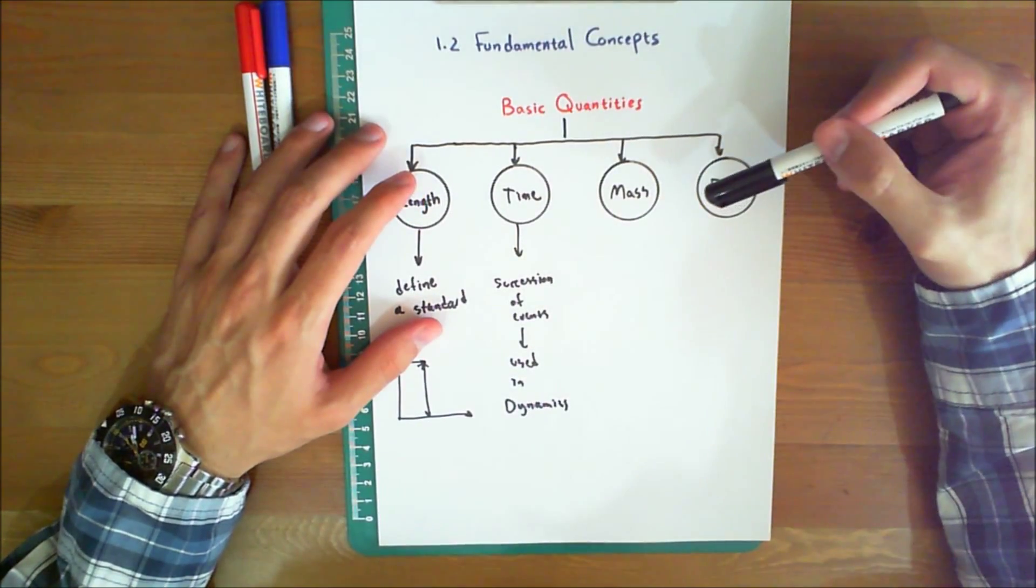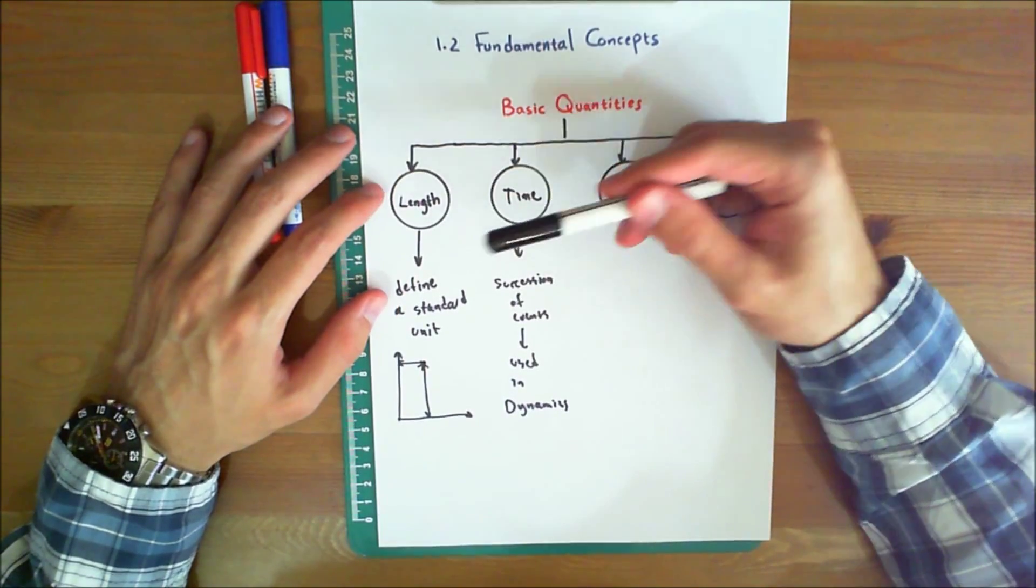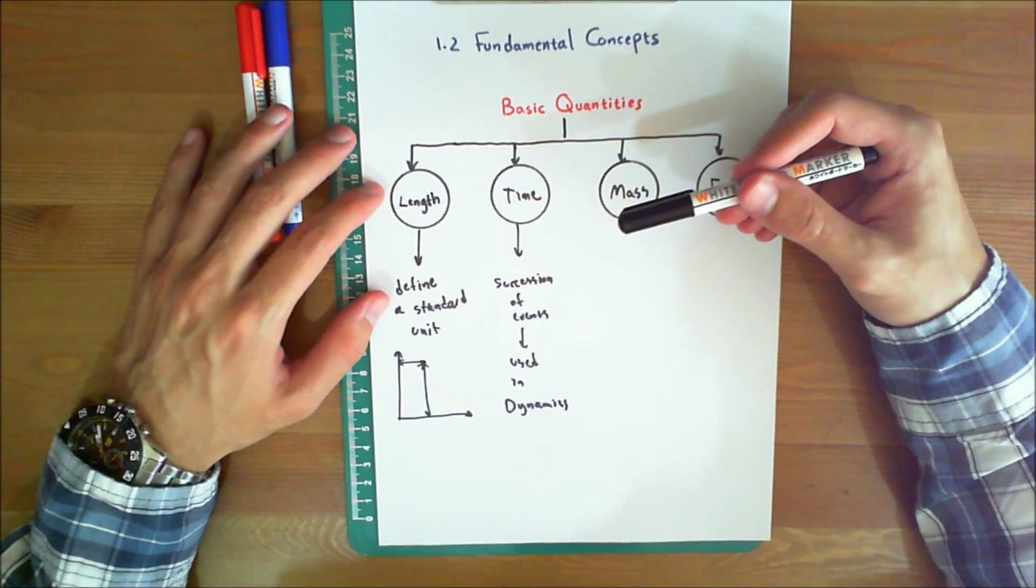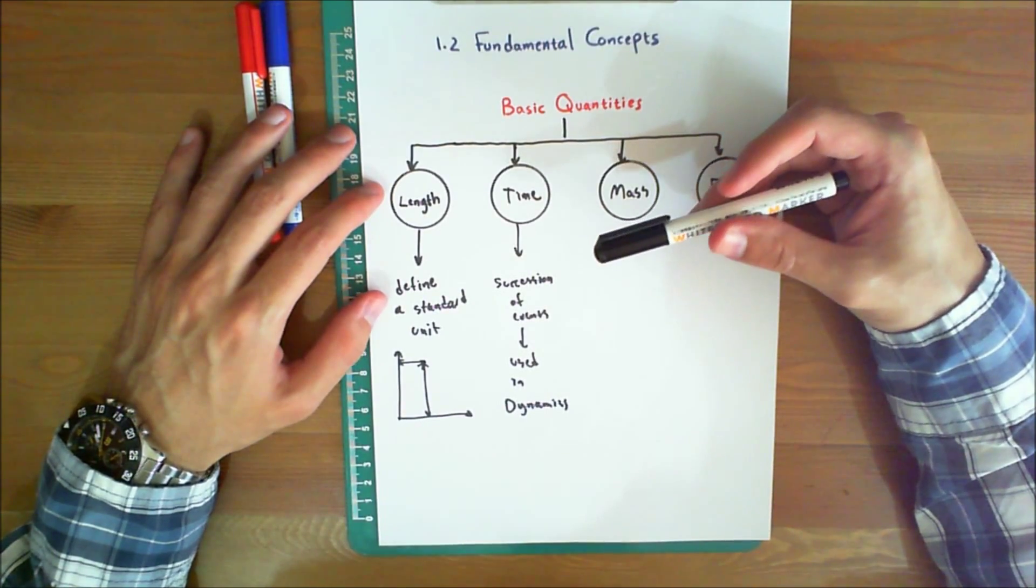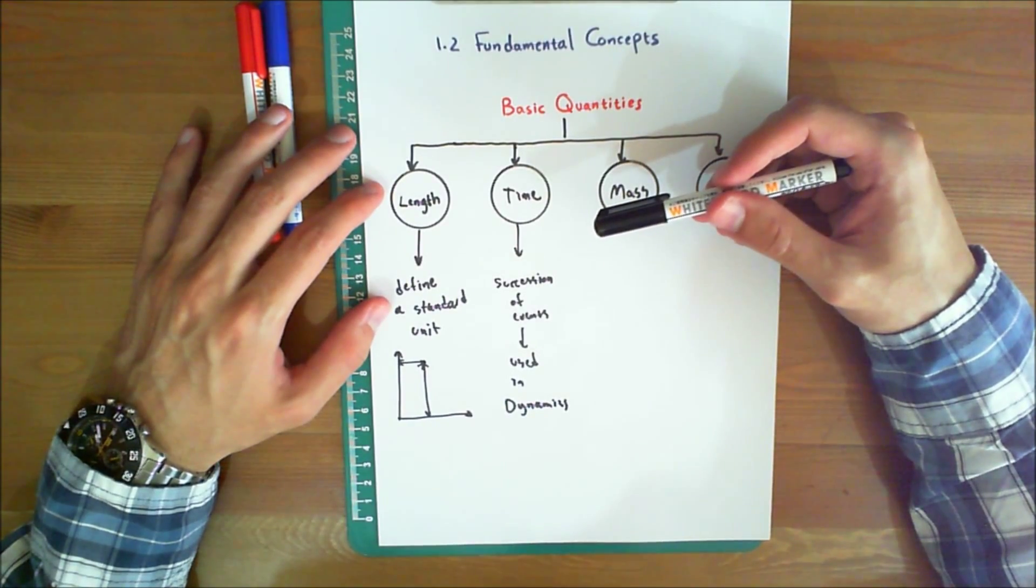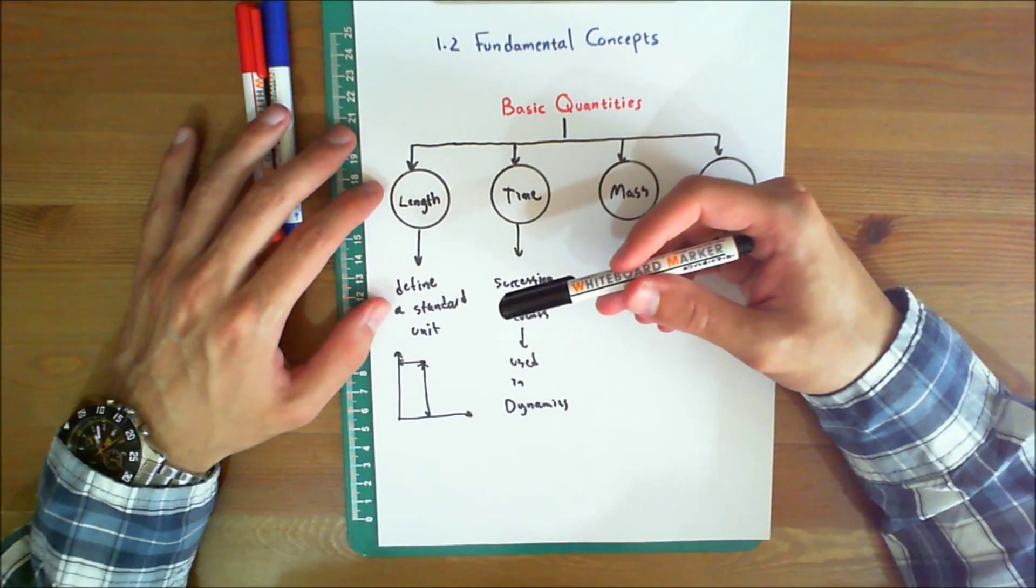The following four quantities are used throughout mechanics, the first of which is length. Length is needed to locate the position of a point in space and thereby describe the size of a physical system. Once a standard unit of length is defined,